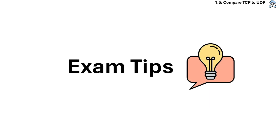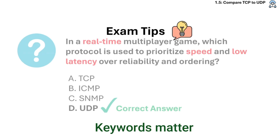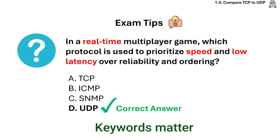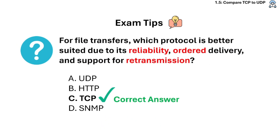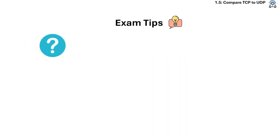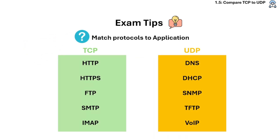Some exam tips for TCP and UDP topics: keywords matter. If the question mentions speed, low latency, or real-time, it's UDP. If it mentions reliability, order, or retransmission, it's TCP. You should also know which common protocols use TCP versus UDP.